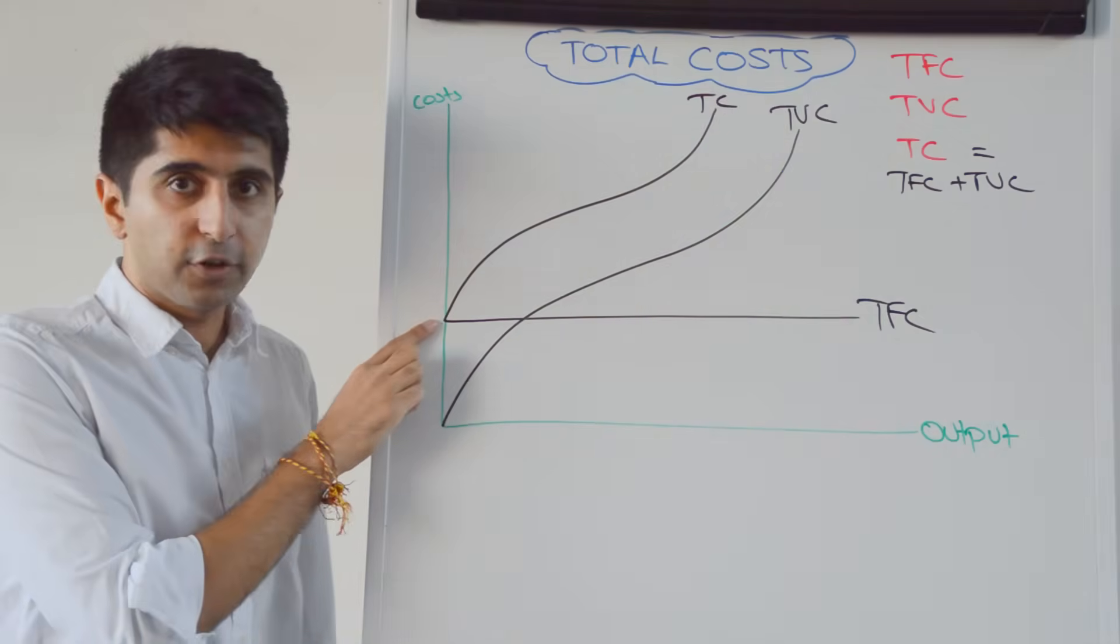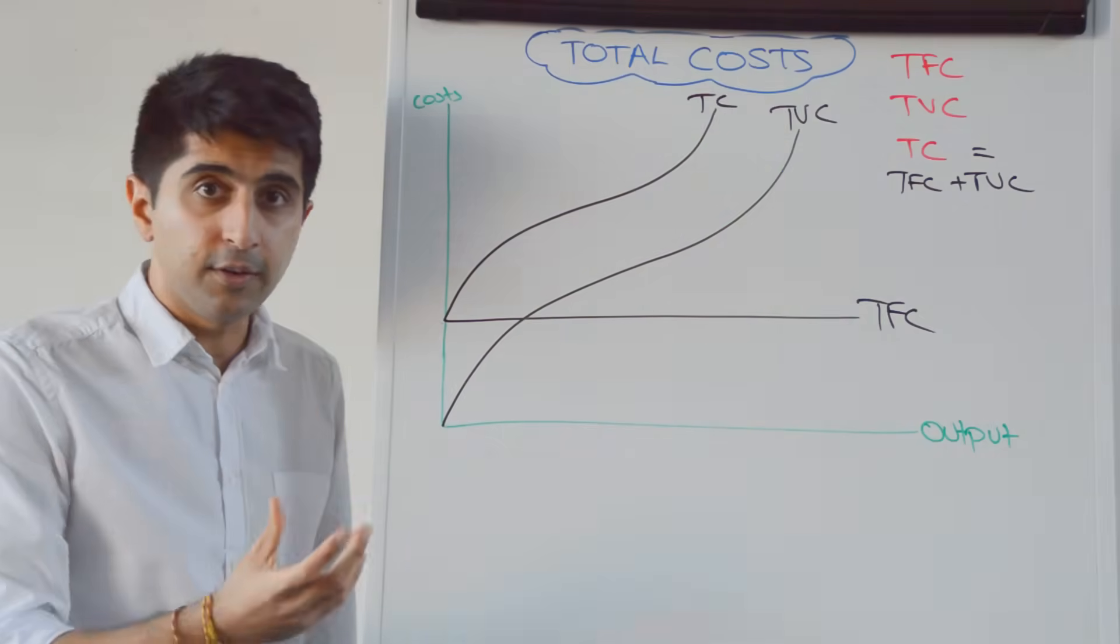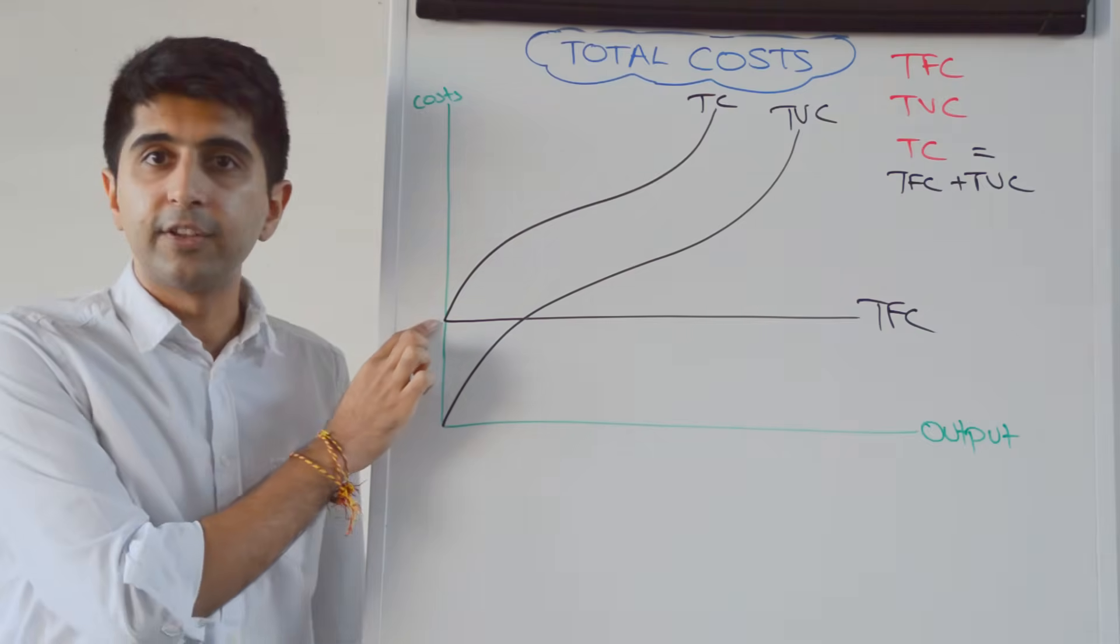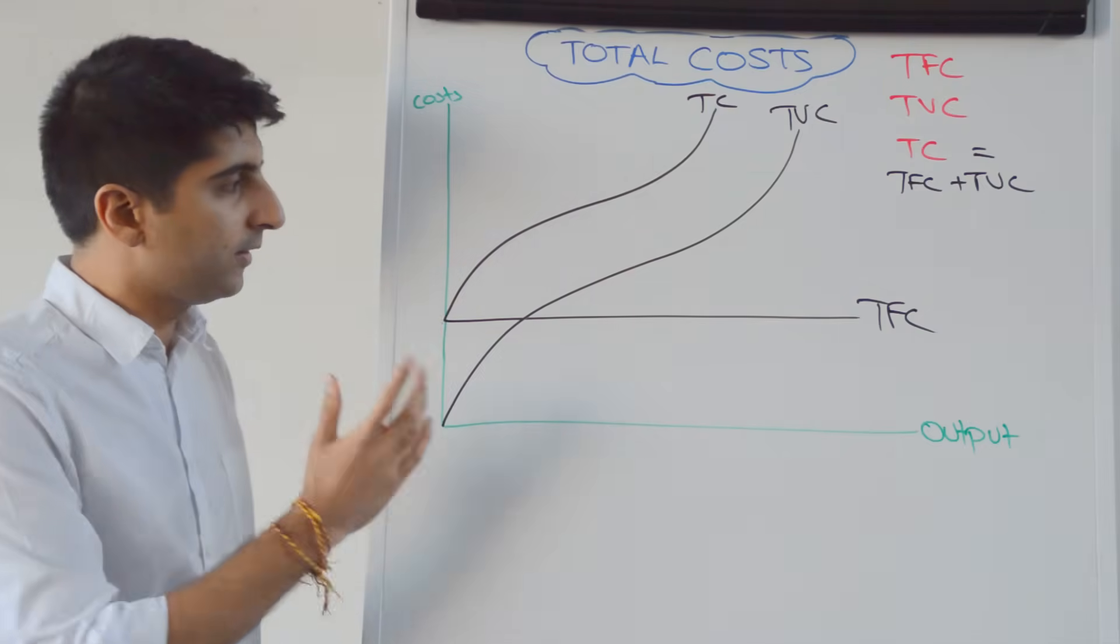Starting at total fixed cost, because at that point, TVC is zero, so it's got to have to start at the total fixed cost point, which is positive at zero output.